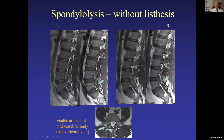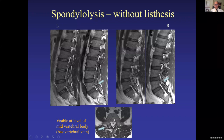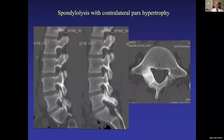Pars defects: you can see pars defects on parasagittal images as a break in the pars. Without a vertebral slip they may look like facet joints on the axial scan, but remember the facet joint is at the disc level — you don't see the facet joint at the mid-vertebral level. The basivertebral vein helps confirm you're at the mid-vertebral level — so if you see what looks like a joint there, those are pars defects. On CT, if a pars defect is present on one side, the opposite side may show stress hypertrophy and sclerosis of the contralateral pars — both can be pain generators.